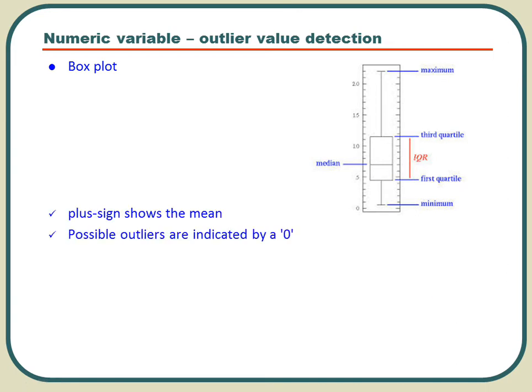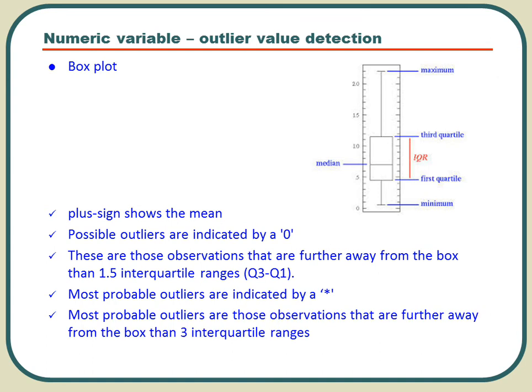And anything which is beyond 3 times the IQR, essentially anything greater than Q3 plus 3 times IQR or anything less than Q1 minus 3 times IQR, should give you most probable outliers. These are indicated by a star in SAS. These are the outliers.